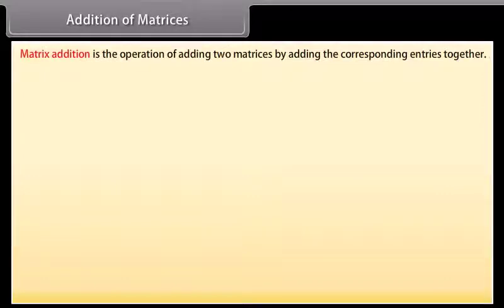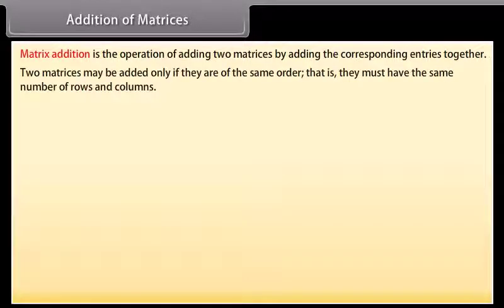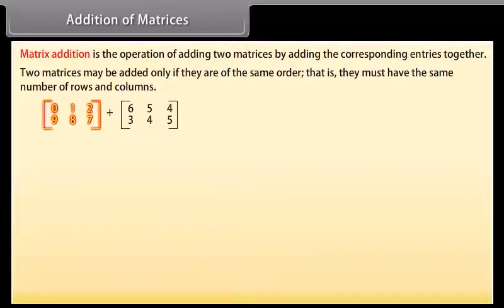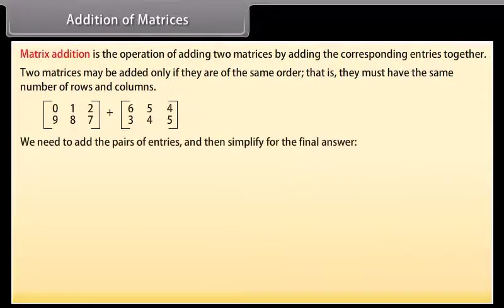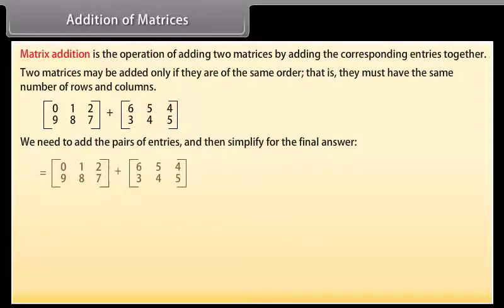Addition of matrices. Matrix addition is the operation of adding two matrices by adding the corresponding entries together. Two matrices may be added only if they are of the same order, that is they must have the same number of rows and columns. Let's add these matrices — we need to add the pairs of entries and then simplify for the final answer.